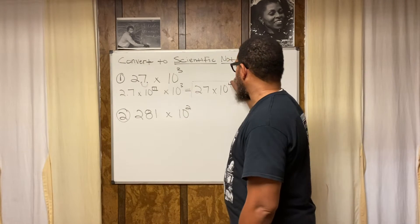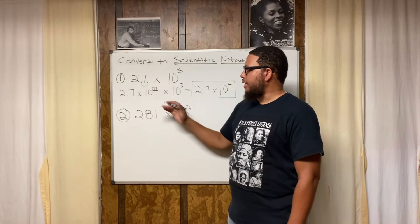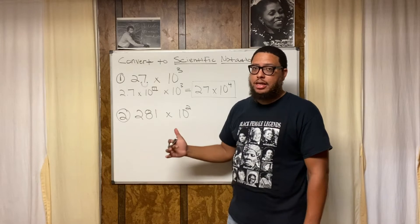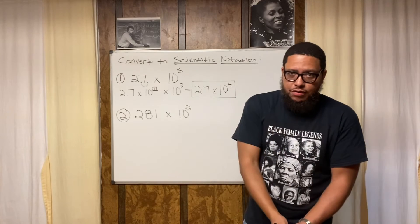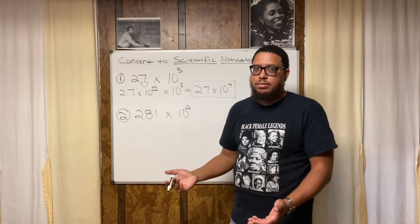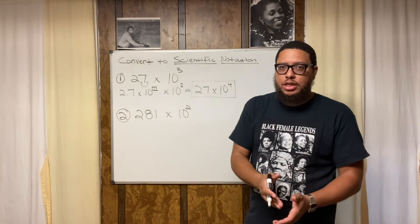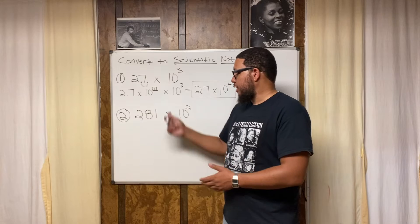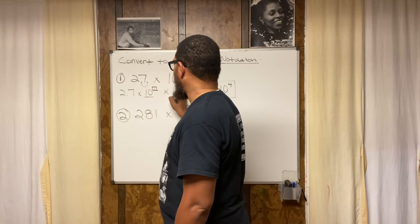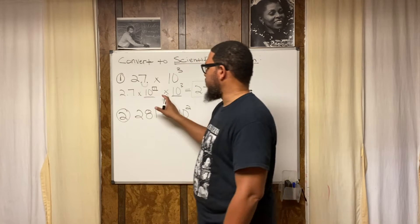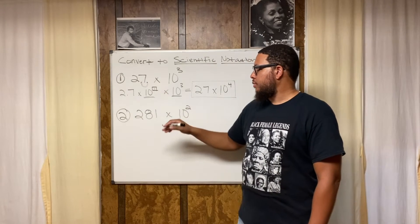So our final answer is 2.7 times 10 to the fourth. That's all we did — we combined those two 10s. This is multiplication only, not combining like terms the way we do in addition and subtraction.